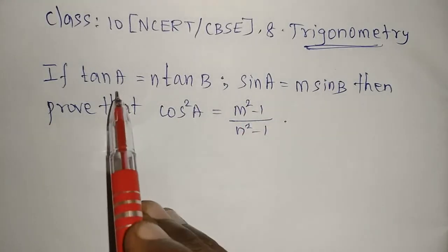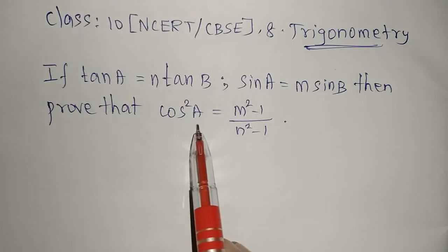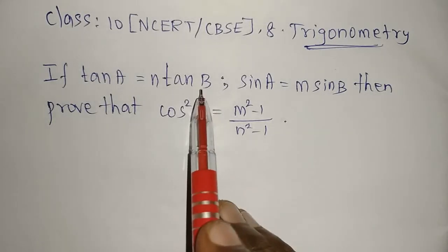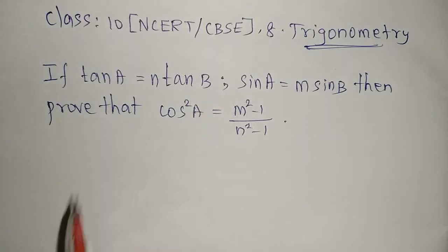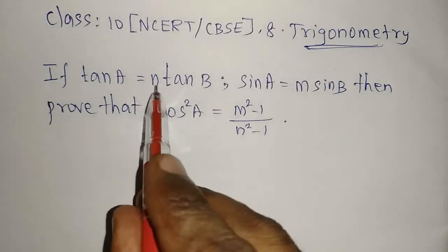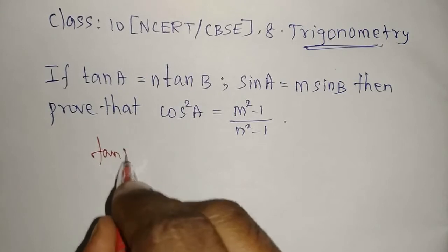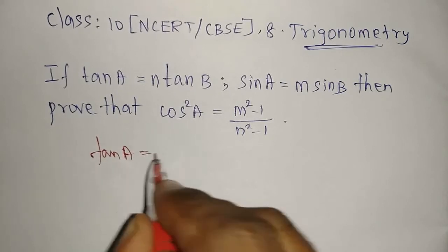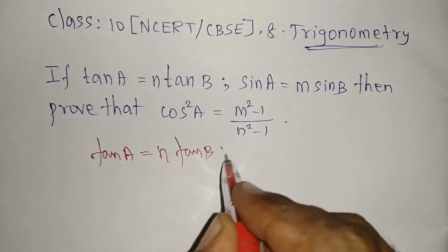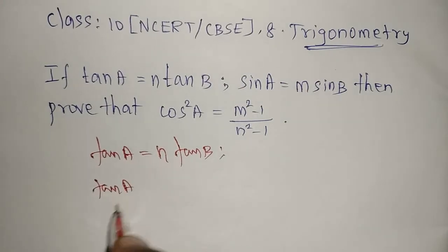Here we have two angles A and B, but in the proof we need only one angle. So angle B we need to remove — that is our aim. Before that, we will find the n and m values. From the given tan A = n·tan B, I am going to find the n value.